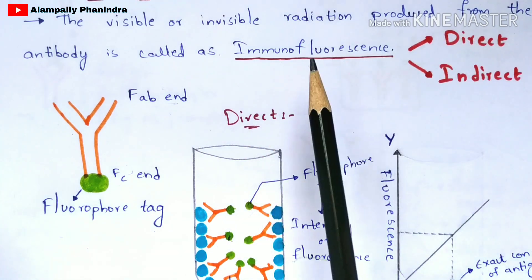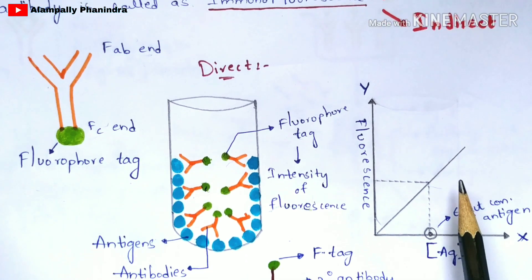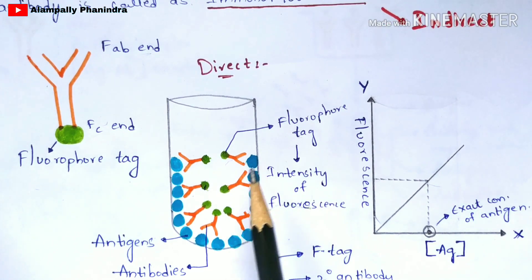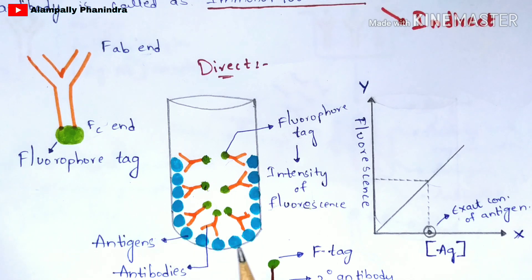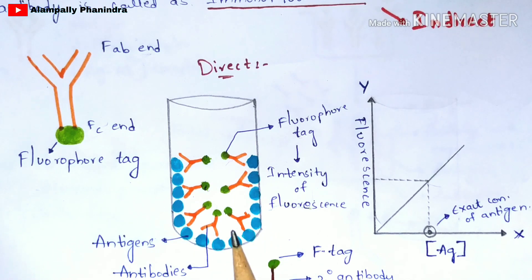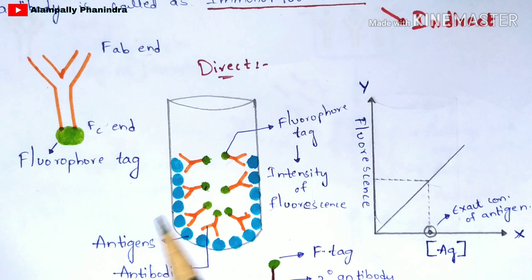In the direct procedure of immunofluorescence, in the first step you are going to take a test tube. Now you are going to add the antigen — the blue colored structures drawn are the antigens — and you add them in such a way that all of these antigens get attached to the surface of the test tube.